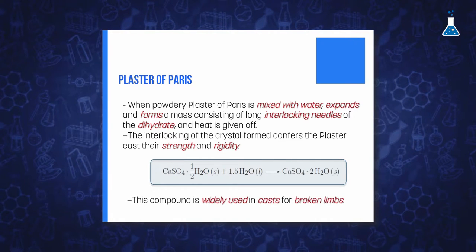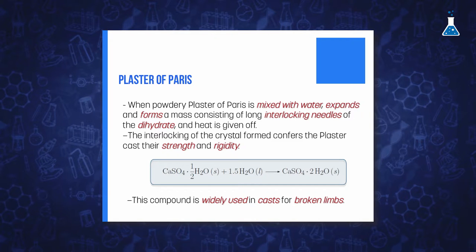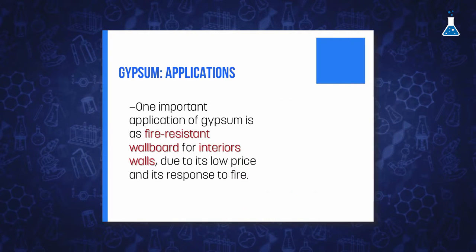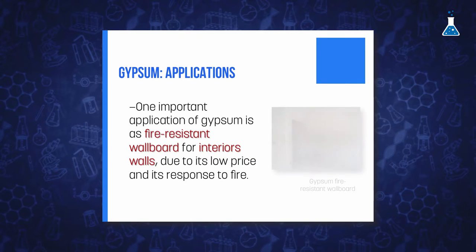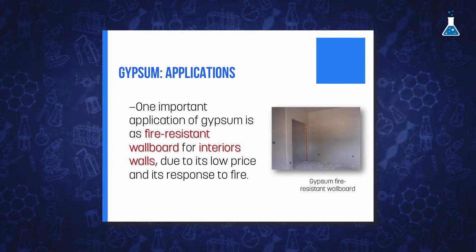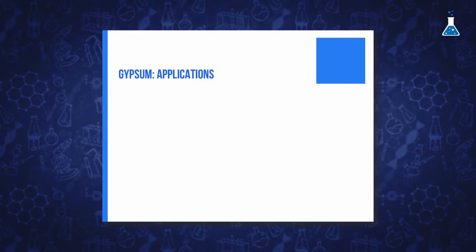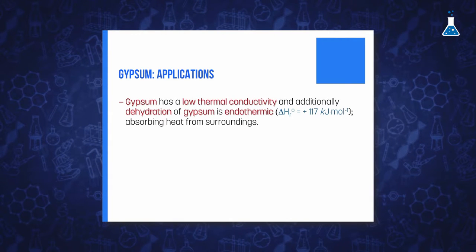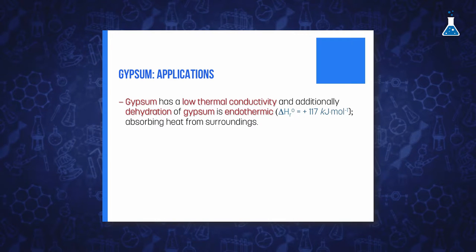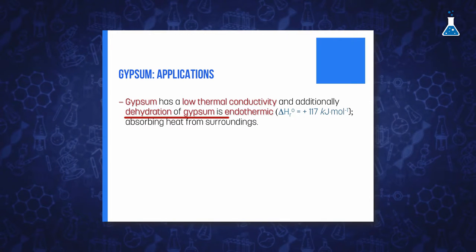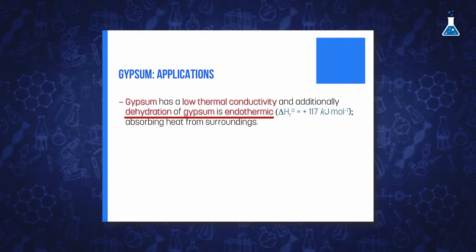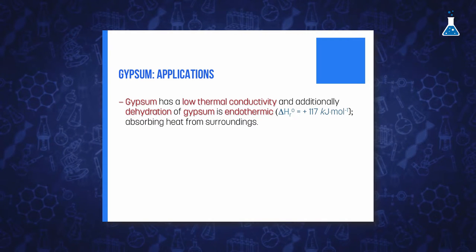The interlocking of the crystal structure confers the plaster cast its strength and rigidity. This compound is widely used in casts for broken limbs. One interesting application of gypsum is as a fire-resistant wallboard employed for interior walls in houses and offices. The advantage of using this material is both its price and its resistance in case of fire. Gypsum has a low thermal conductivity, and additionally, the dehydration reaction of gypsum is endothermic.